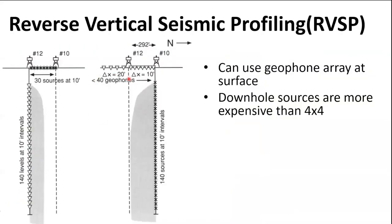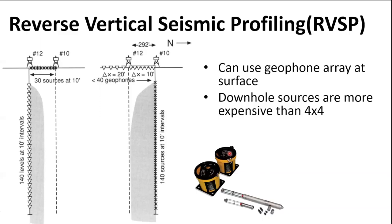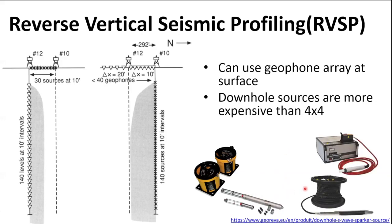There's also what we call a reverse seismic profile or RVSP. Rather than putting the source at the surface and the geophone at the bottom, we put the source in the borehole and an array of geophones at the top. This has advantages because you can use an array of geophones and get some estimate of lateral velocity — measuring interval velocity across a span rather than just a single point. However, you do need a downhole source, which is more expensive than a 4x4 beam. This is an example of a downhole source that our sister company Olson Instruments makes, with three pistons that can impart directional motion into the ground.